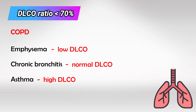These findings are very specific for these diseases. So for example, if they give a ratio less than 70% with normal DLCO, this is definitely chronic bronchitis — even if the history strongly suggested asthma.